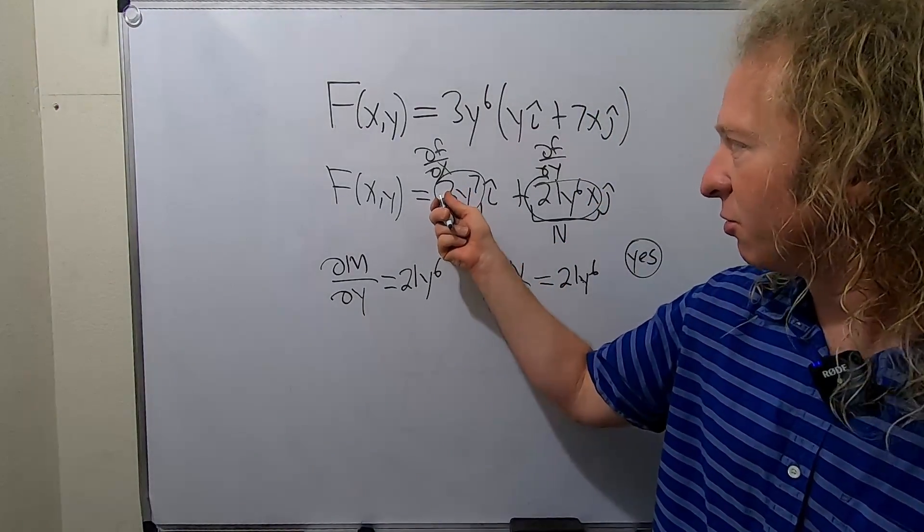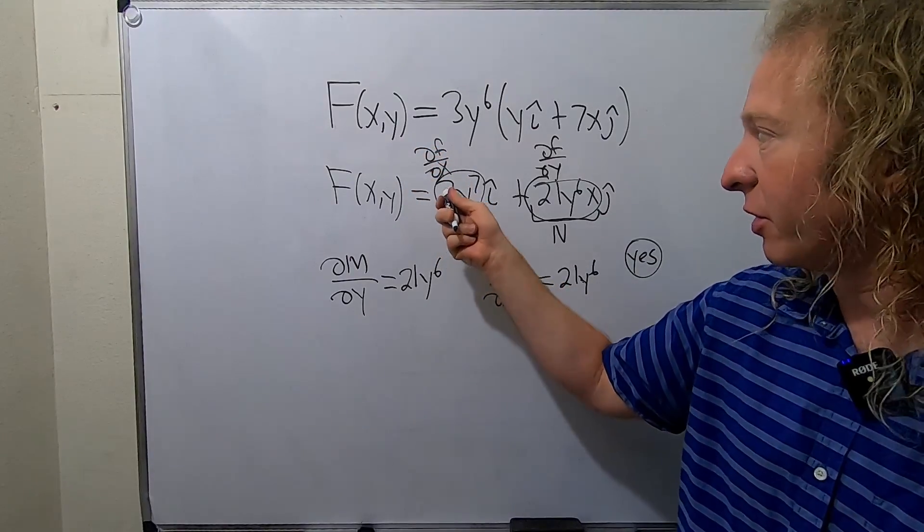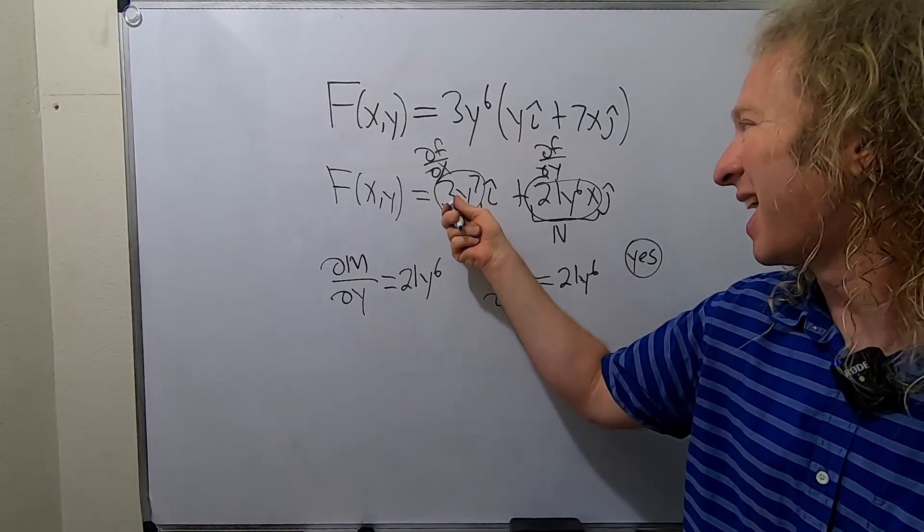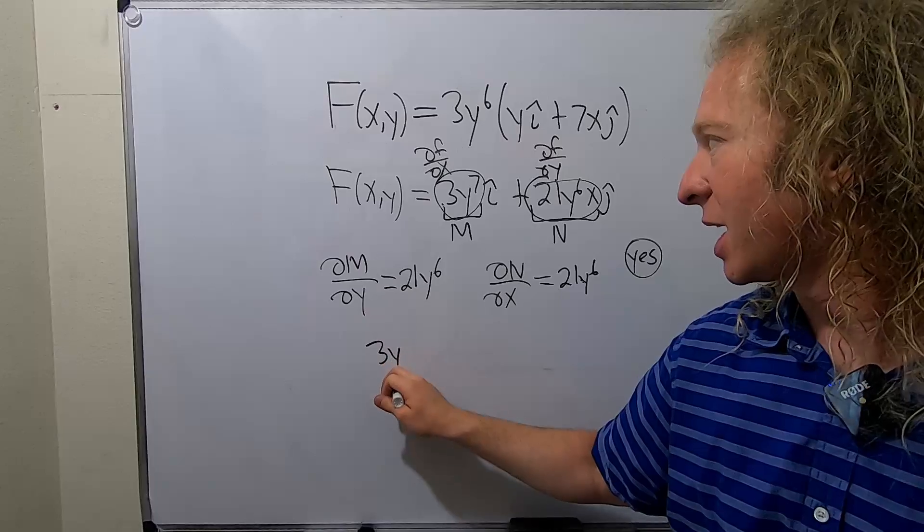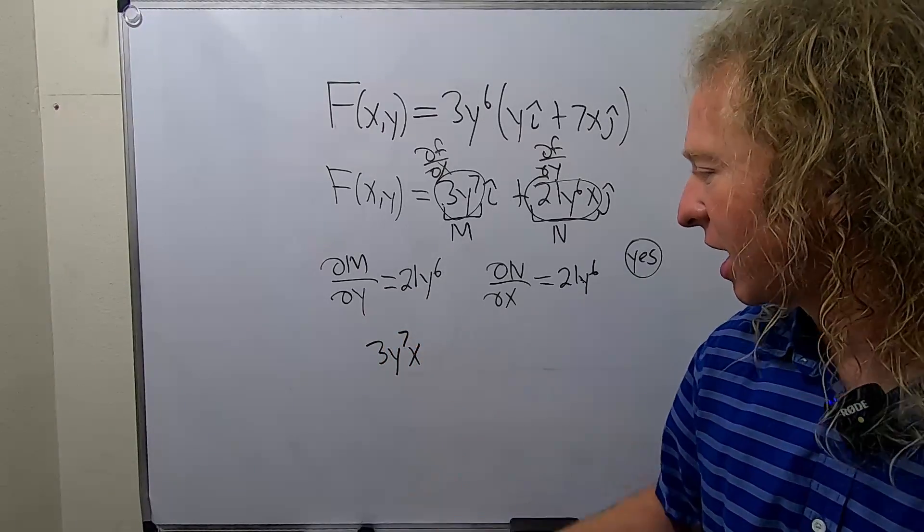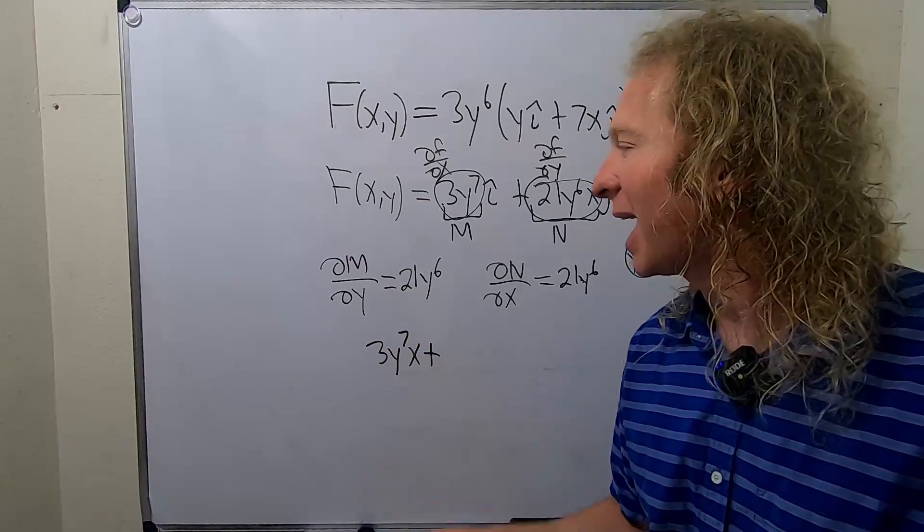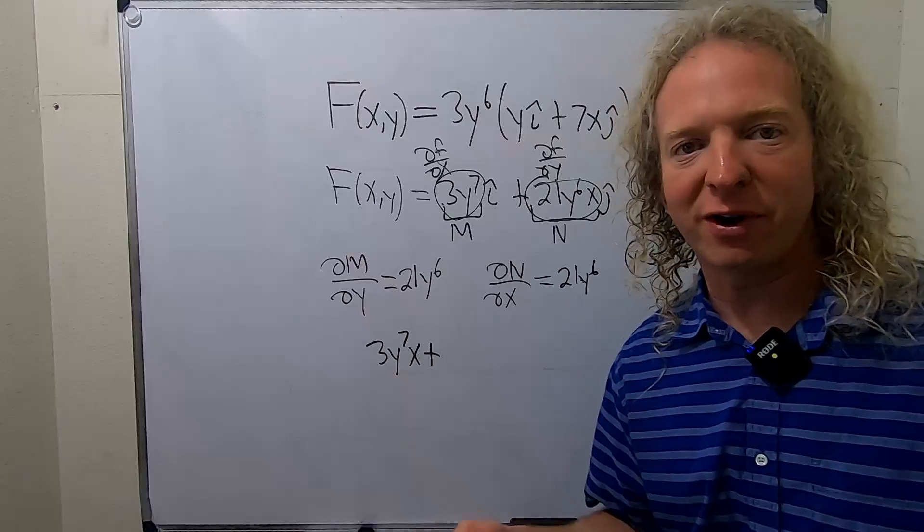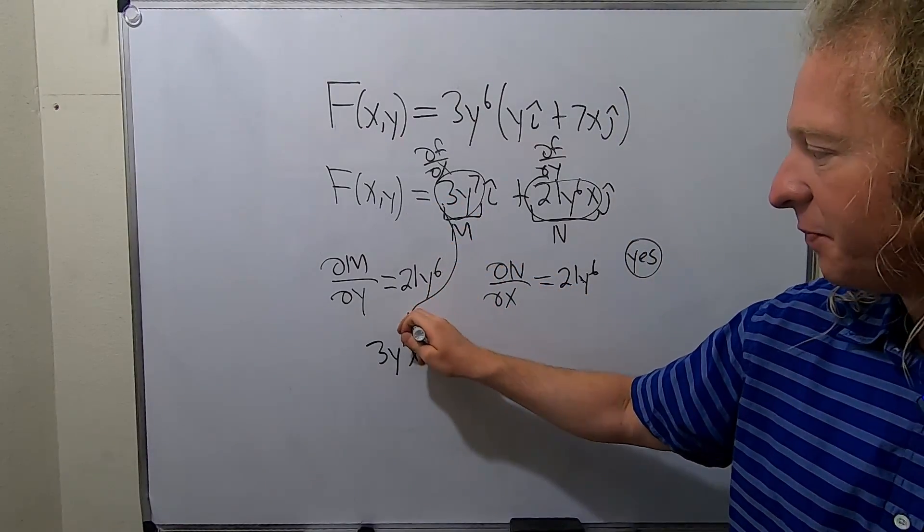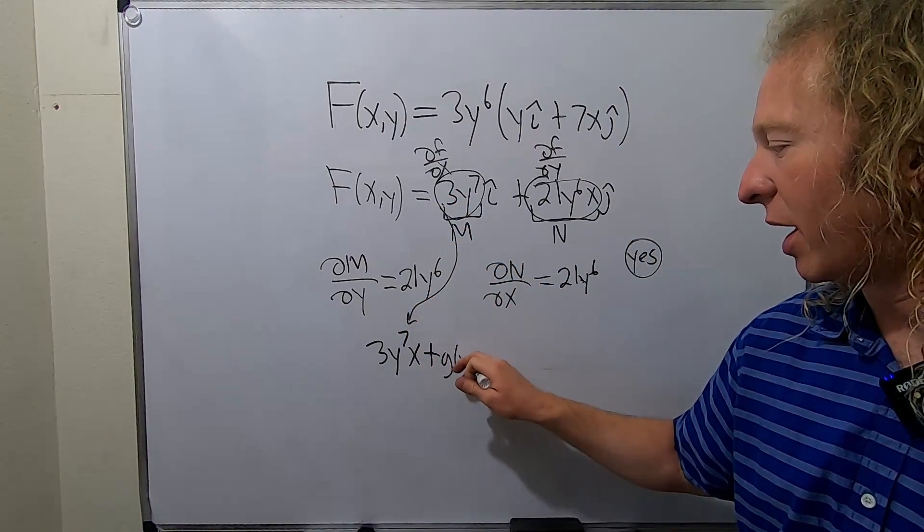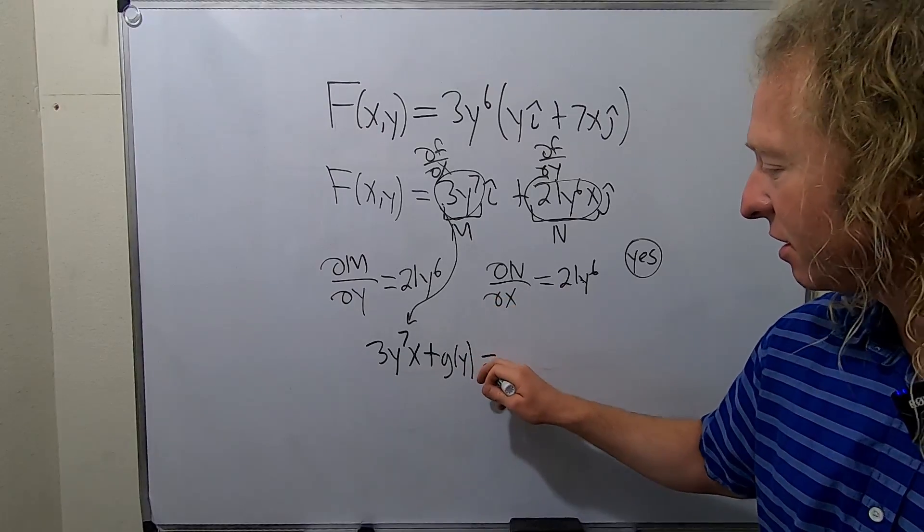So you integrate this to retrieve little f from ∂f/∂x. You integrate this with respect to x. So this is a constant. You just put an x next to it when you integrate with respect to x. Then you have to add an unknown function of the other variable. So we integrated this with respect to x, so we add an unknown function of y.